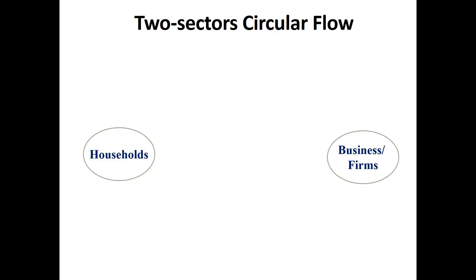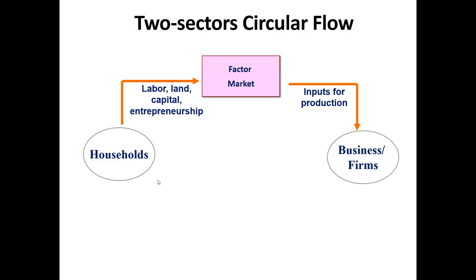Let's understand the two-sector economy. Two-sector economy means we are talking about household and business firms. Business firms are those that are producing — they are manufacturers providing goods and services. Household means those people who are providing labor, land, capital, and entrepreneurship — that means they are creating the factor market.